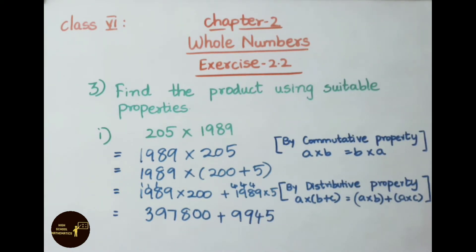We shall add now. 0 plus 5 is 5. 0 plus 4 is 4. 8 plus 9 is 17, so 7 carry 1. 7 plus 9 plus 1 is 17, so 7 carry 1. 3 plus 9 plus 1 is 13, so 3 carry 1. So our final answer is 407,745.